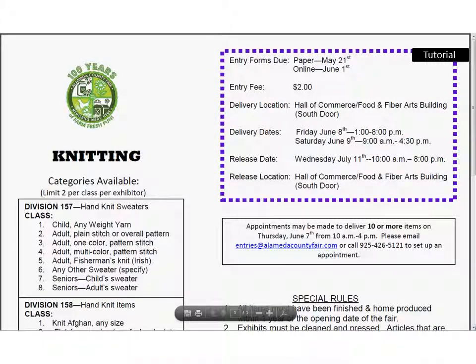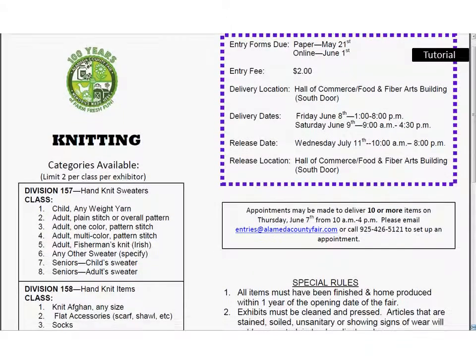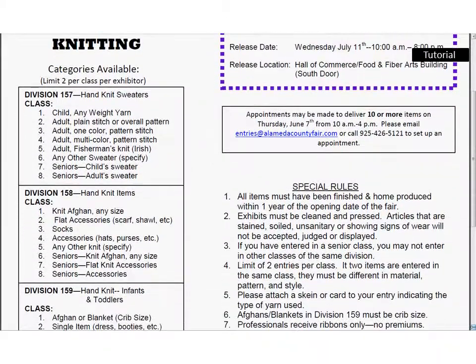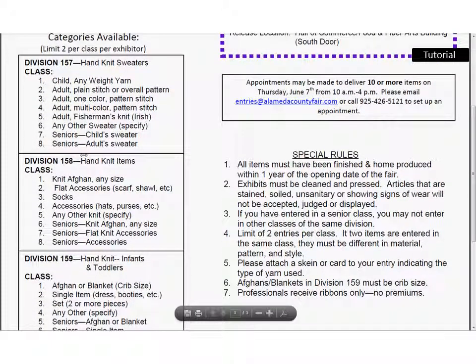This will bring up the page that has all of the information about delivery, about when you'll pick up your items, and about any special rules for these particular sections. It'll give you the list of all of the various categories that you can enter under Adult Knitting. For this tutorial, we're going to go under Hand Knit Items and enter some knit socks. This page is one that you're going to want to print out because it'll be pertinent to you throughout the entire entry process.